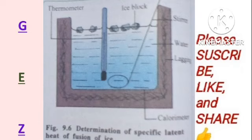When the temperature of the mixture is about 5 degrees below room temperature, the exact temperature is read with the thermometer, and the calorimeter with its contents is weighed to find the mass of ice added. Using this setup, you can calculate the specific latent heat of fusion of ice using the formula H equals mL.